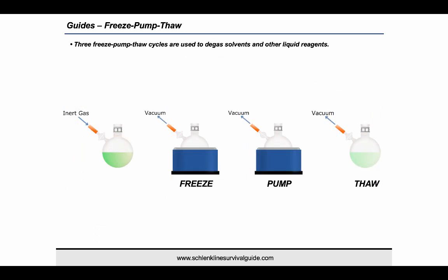Solvents, solutions and liquids can be degassed using the freeze-pump-thaw method. The liquid is sealed in the Schlenk flask or other suitable flask and frozen in a dewar of liquid nitrogen. Once completely frozen, the headspace is evacuated under vacuum for 5 or so minutes depending on the volume. The flask is sealed and the liquid is allowed to completely thaw. This process is repeated 2 more times and then the flask can be backfilled with inert gas.